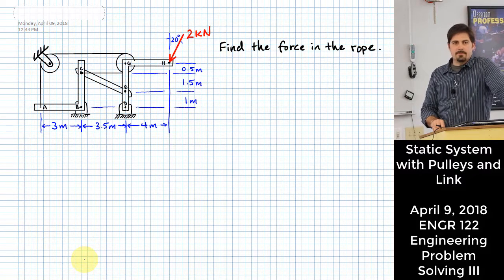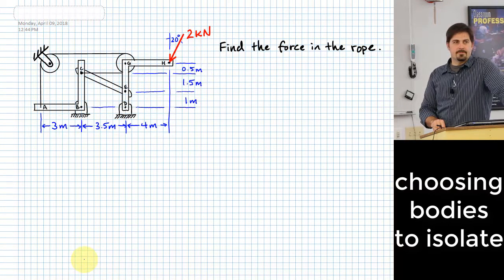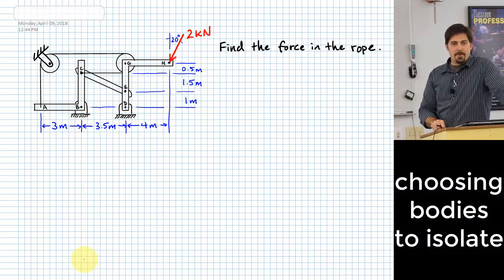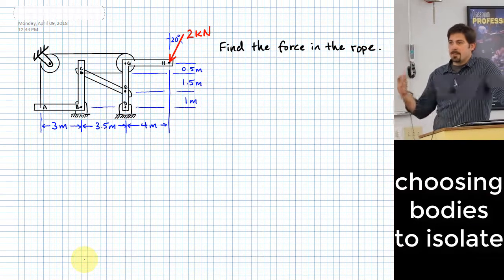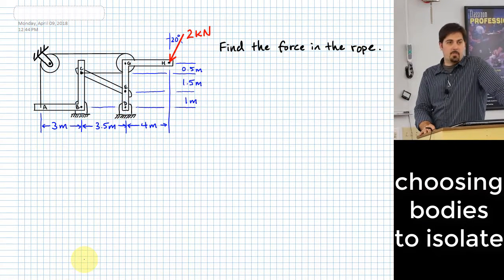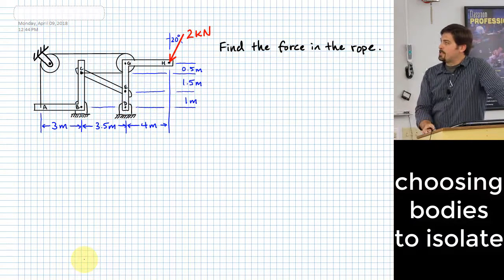What should we do first? A free body diagram. What should we do a free body diagram of? Maybe there should be two, or generalizing it, maybe we should have more than one — maybe we need multiple free body diagrams. That's one of the possibilities here because we have a system where there are multiple bodies all represented.